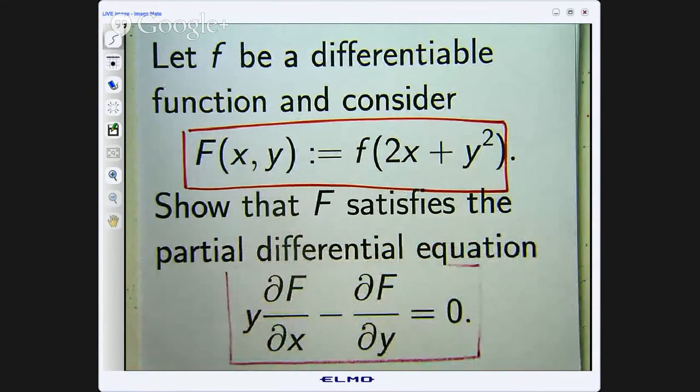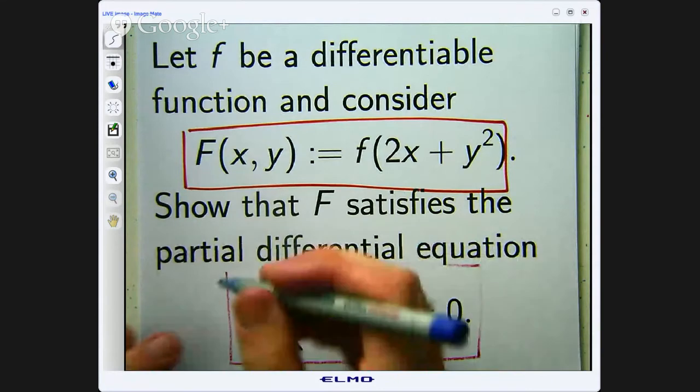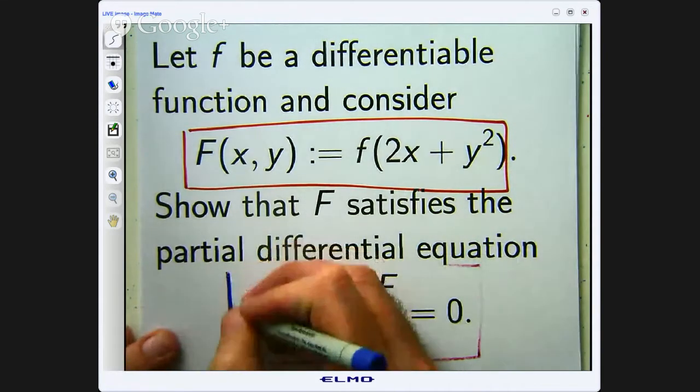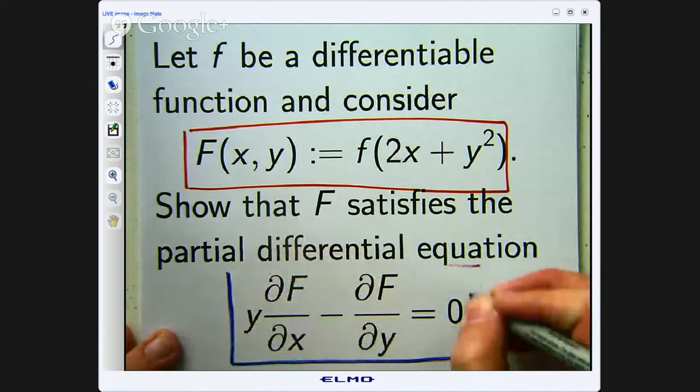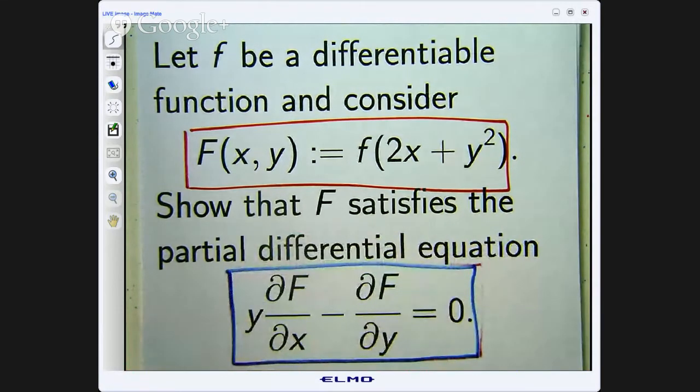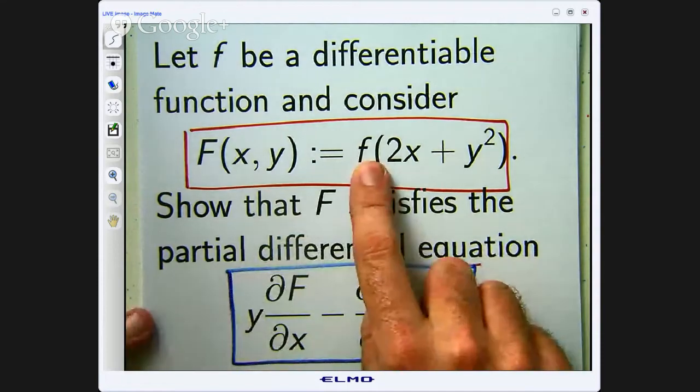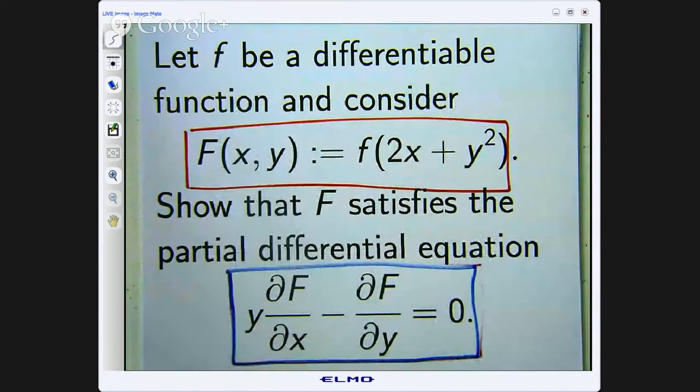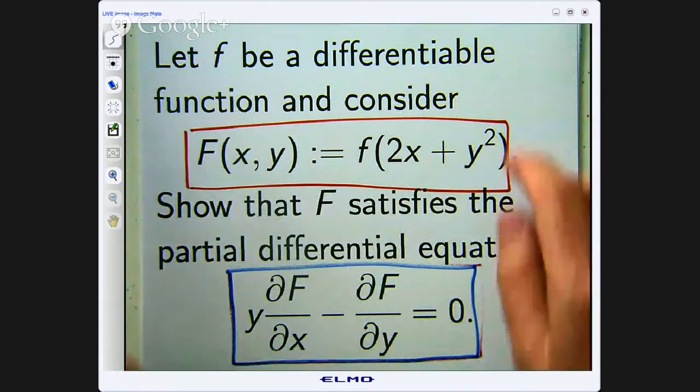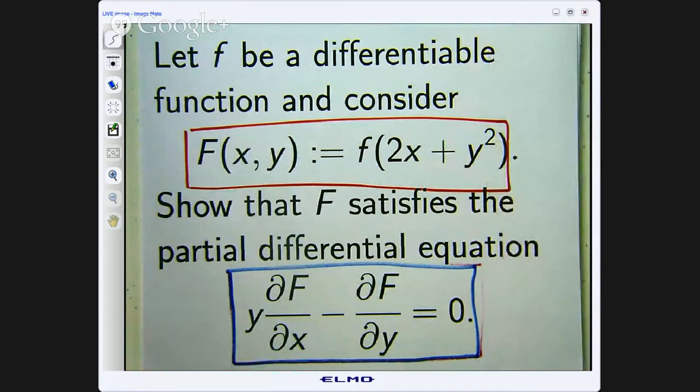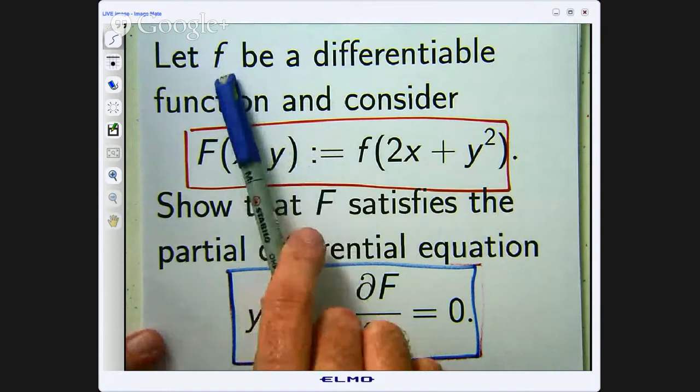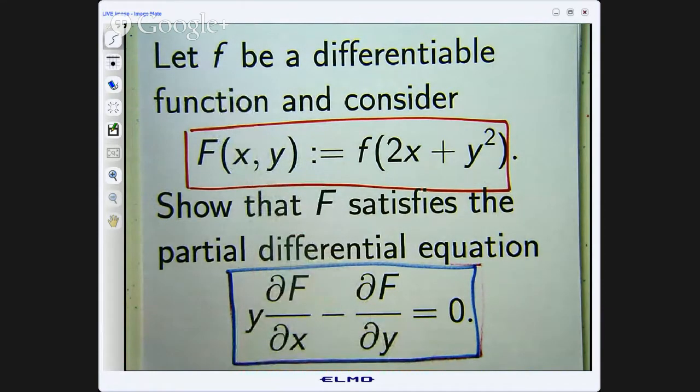We don't know what little f is. All we know is that it's differentiable. Now if a function is differentiable then we can apply the chain rule to it. So what do we mean when we say differentiable? Well it's like a prelude to using the chain rule in this example, but think of a function f that has continuous partial derivatives. Those kinds of functions are differentiable.